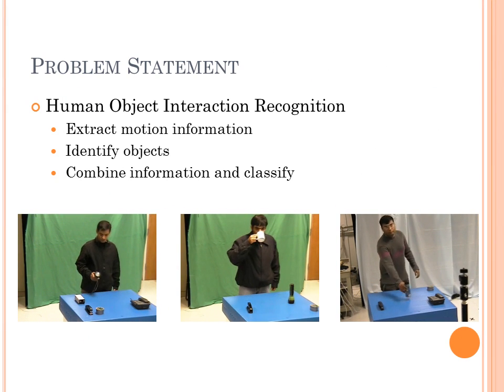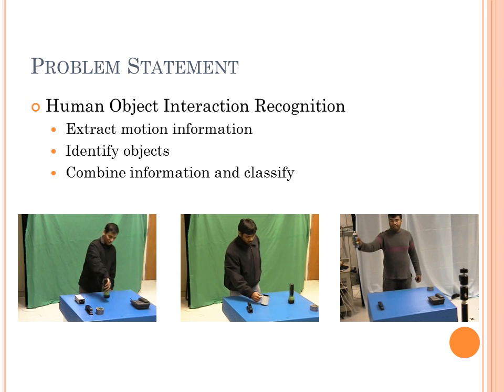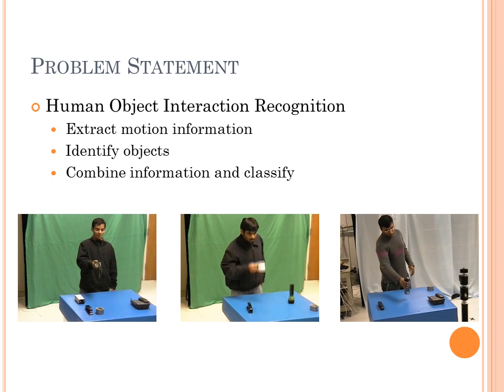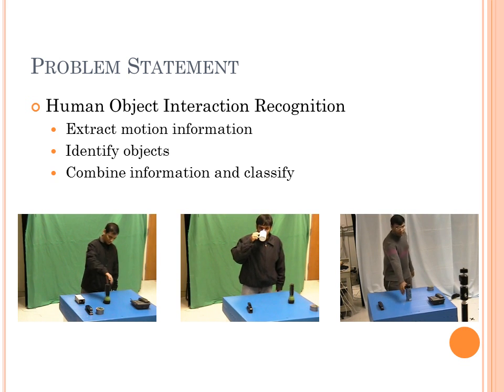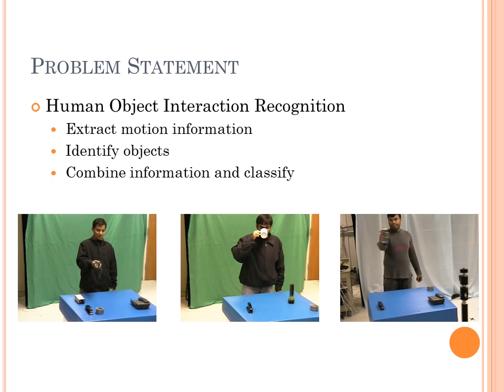Our goal is to present a framework that can classify a human-object interaction taking place in a video. In order to accomplish this, we have three key steps: extract motion information on key objects in a video, identify the object being interacted with, and combine the information gained from the previous steps to classify the interaction.